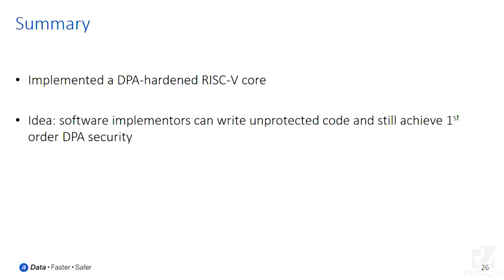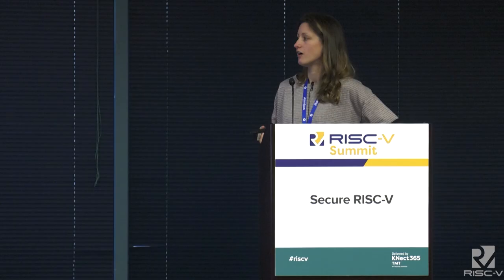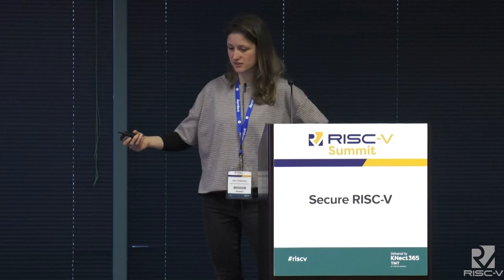Basically, what we did was implement a DPA-hardened core with the idea that the software implementer can now write unprotected implementations and still achieve first-order DPA security in a fairly easy manner. This means that if you don't want to invest in area to put in a DPA-protected hardware core, you can run it on the RISC-V core and have the flexibility to choose which algorithm you run. That was the idea.